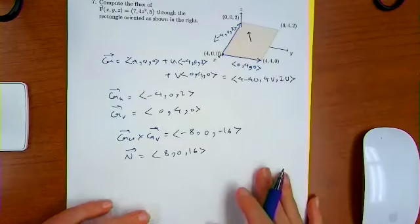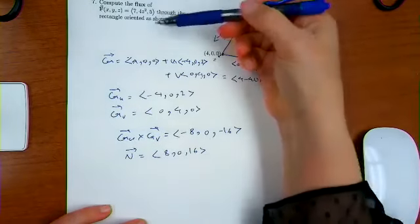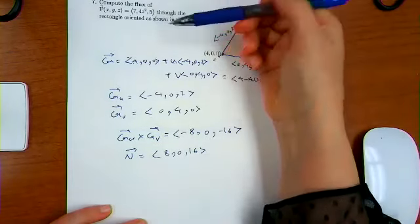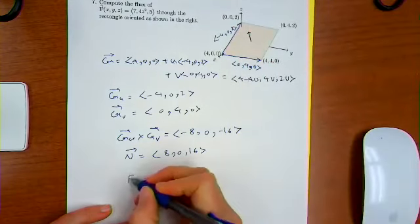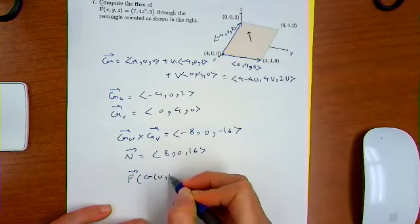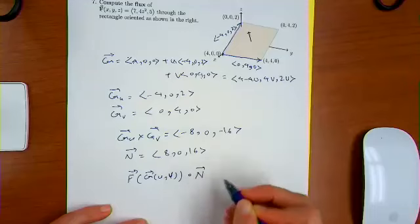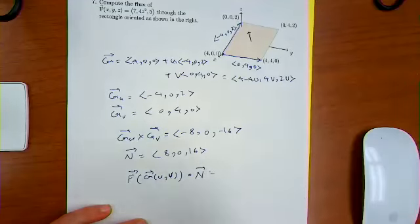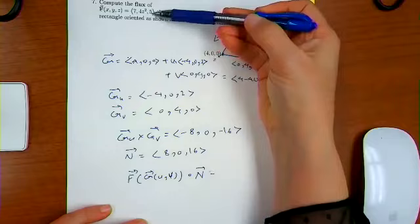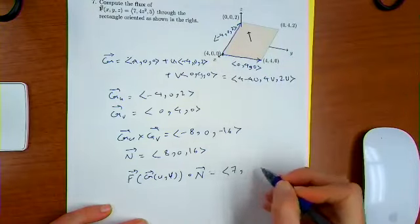Okay, so I found n. Now I have n. I have the parametrization. I have to find f of g of u and v dot n. Okay, so I have to plug in the z, whatever that is. It turns out it doesn't matter.